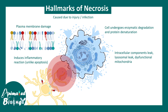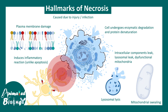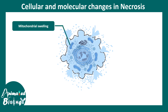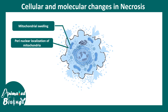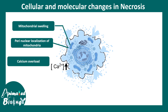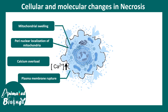There can be dysfunction of mitochondria and many other cellular organelles. Lysosomal lysis and mitochondrial swelling and dysfunction are prominent hallmarks of necrosis. Mitochondria swell up and become localized into the perinuclear region, very adjacent to the nucleus. There is also calcium overload, which results in many detrimental consequences. Plasma membrane rupture leads to leakage of cytoplasmic fluid into the surrounding vicinity, which is peculiar to necrosis and not found in apoptosis.